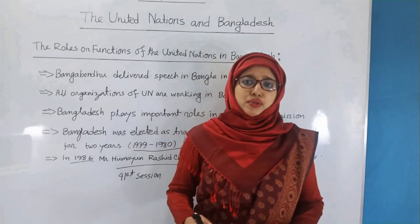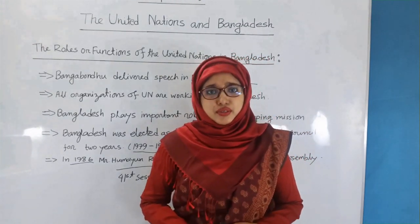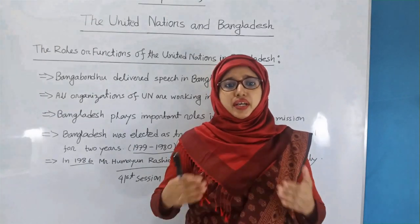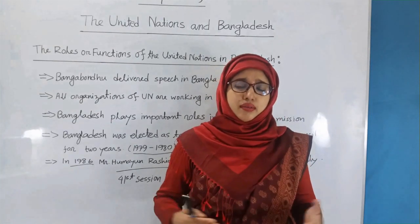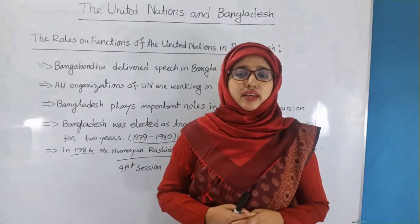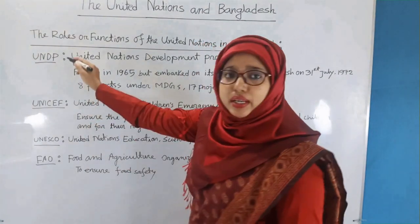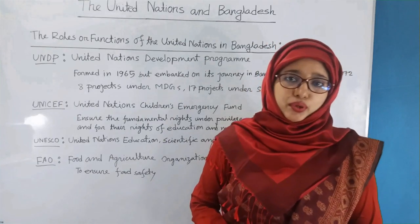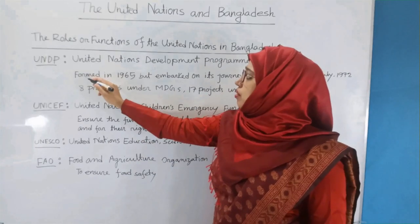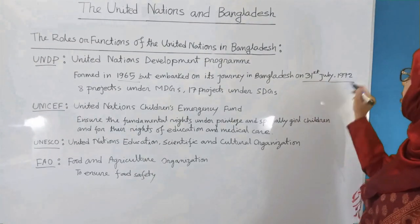Bangladesh has been successful in resolving disputes regarding the distribution of water of the Ganges and the issues of the Chittagong Hill Tracts with India, by following the rules of the United Nations for peaceful settlement of long-term problems. The associate organizations of the United Nations assist Bangladesh in many ways. UNDP stands for United Nations Development Programme. UNDP was founded in 1965 and began its journey in Bangladesh on 31st July 1972.